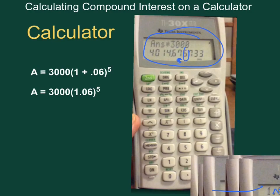So look at the six behind it. It tells this seven to go up, which tells us our answer here is 4,014.68.